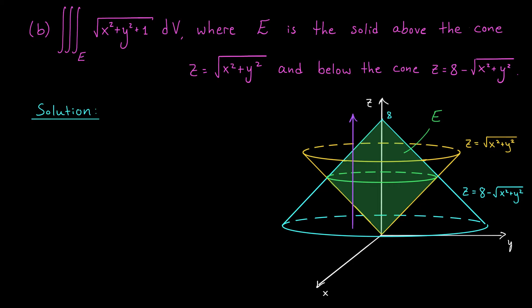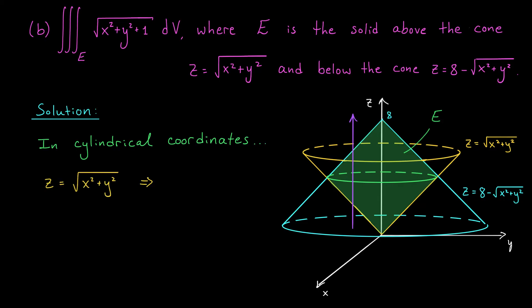Let's convert the cone equations from Cartesian to cylindrical coordinates. Since x squared plus y squared is r squared, the equation of our yellow cone can be written simply as z equals r. Likewise, the equation of our blue cone can be written as z equals 8 minus r. So z equals r is our lower bound and z equals 8 minus r is our upper bound. On the next slide, we'll find the bounds on r and theta and set up the integral.